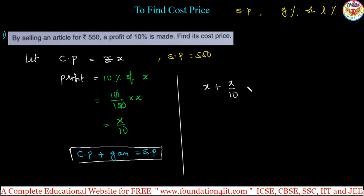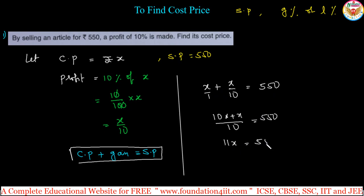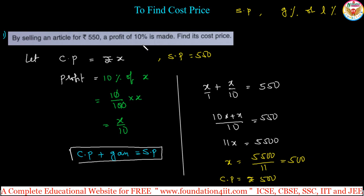Cost price is x and gain is x by 10, so x plus x by 10 equals 550. Taking LCM: 10x plus x by 10 equals 550, that is 11x equals 5500. So x equals 5500 divided by 11. Therefore, cost price equals ₹500.